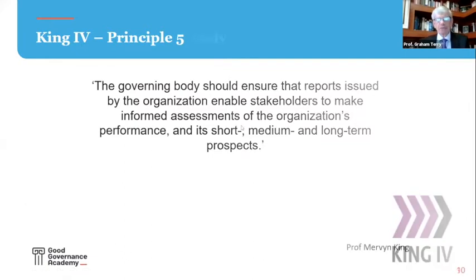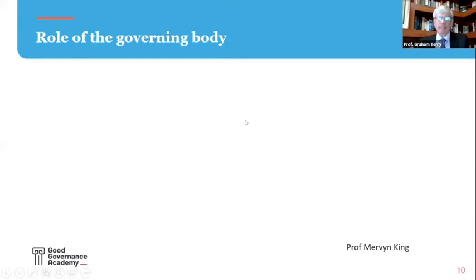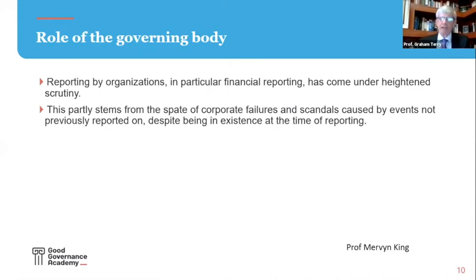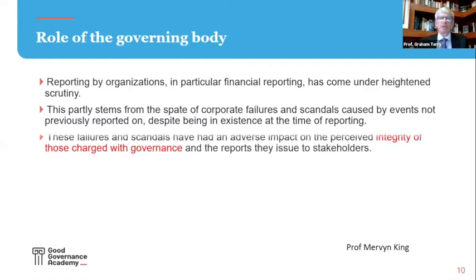I want to go back to that foreword where I quoted from Professor Mervyn King, because he goes on to talk about the role of the governing body in connection with Outlook information. He starts off by saying reporting by organisations, in particular financial reporting, has come under heightened scrutiny in recent years. This partly stems from the spate of corporate failures and scandals caused by events not previously reported on, despite being in existence at the time of reporting. These failures and scandals have had an adverse impact on the perceived integrity of those charged with governance — the board — and the reports they issue to stakeholders.